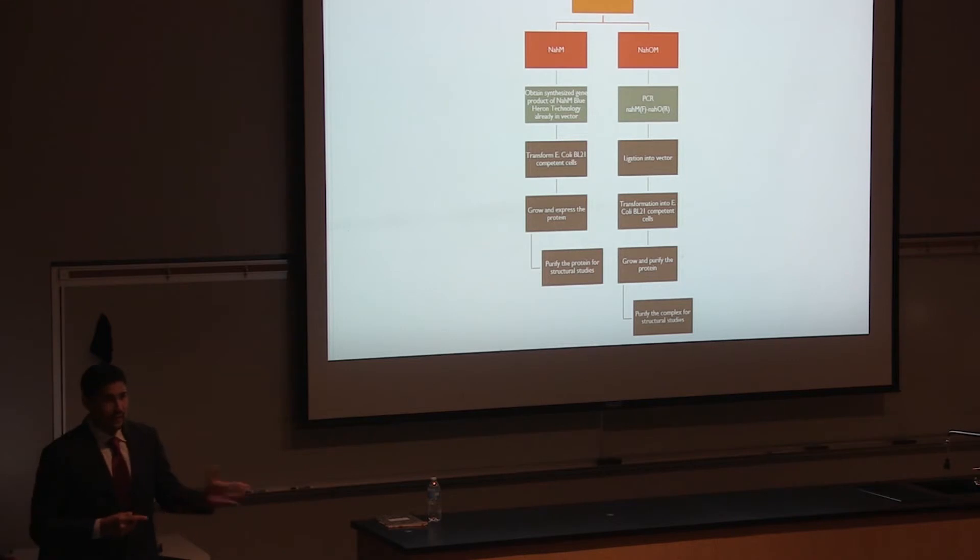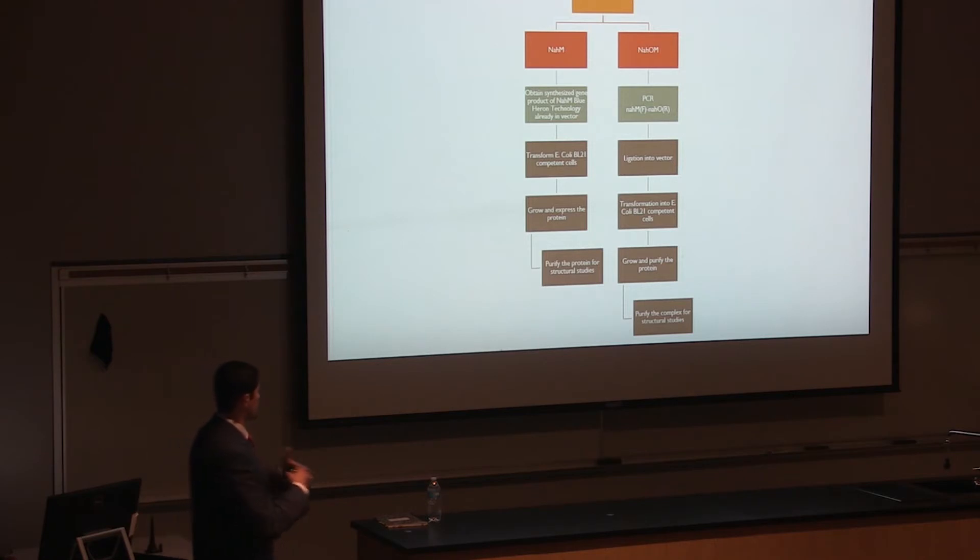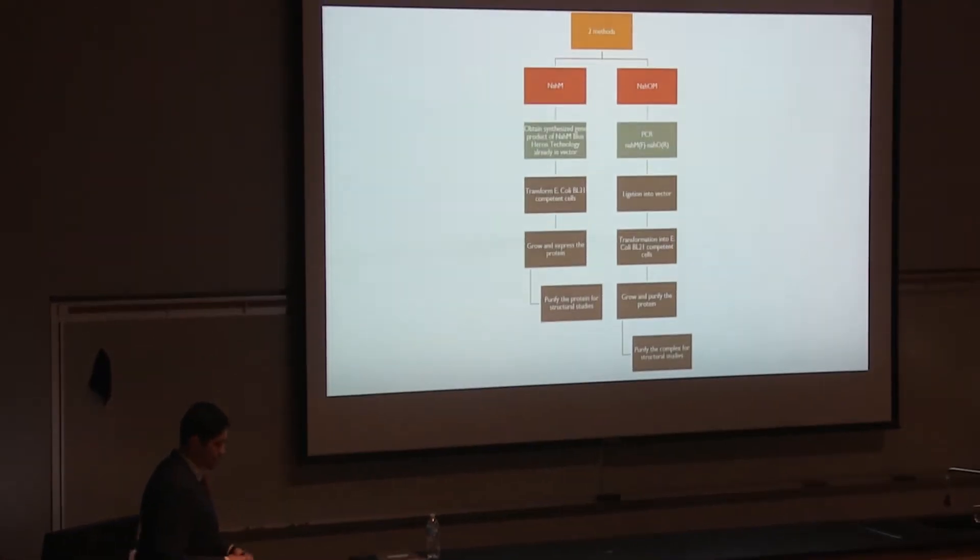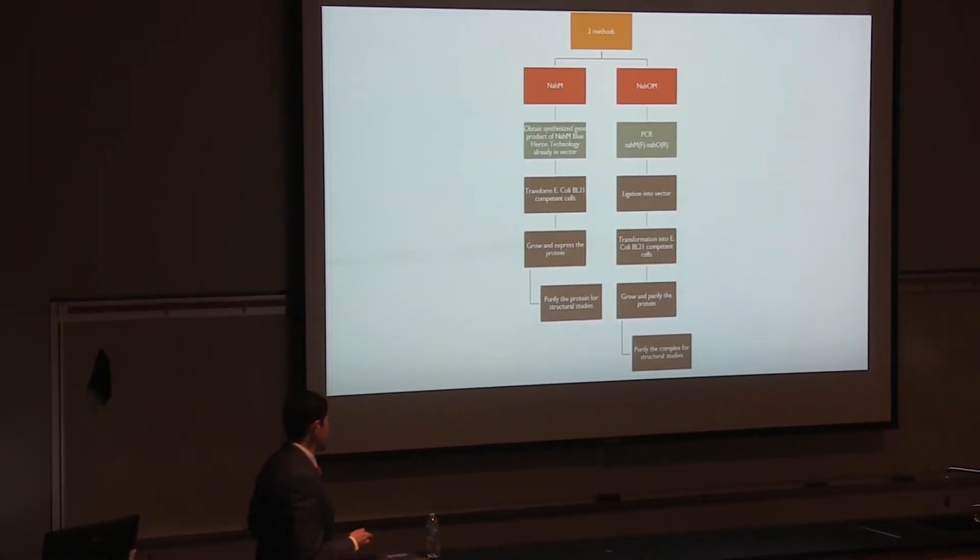To do the structural analysis on the two proteins, we devised this plan for NAHM. First, we have to obtain the synthesized gene product in the vector from Blue Heron technology. Next, we want to transform E. coli BL21 competent cells and grow the cells along with expressing the protein. Finally, we want to purify the protein for structural studies.